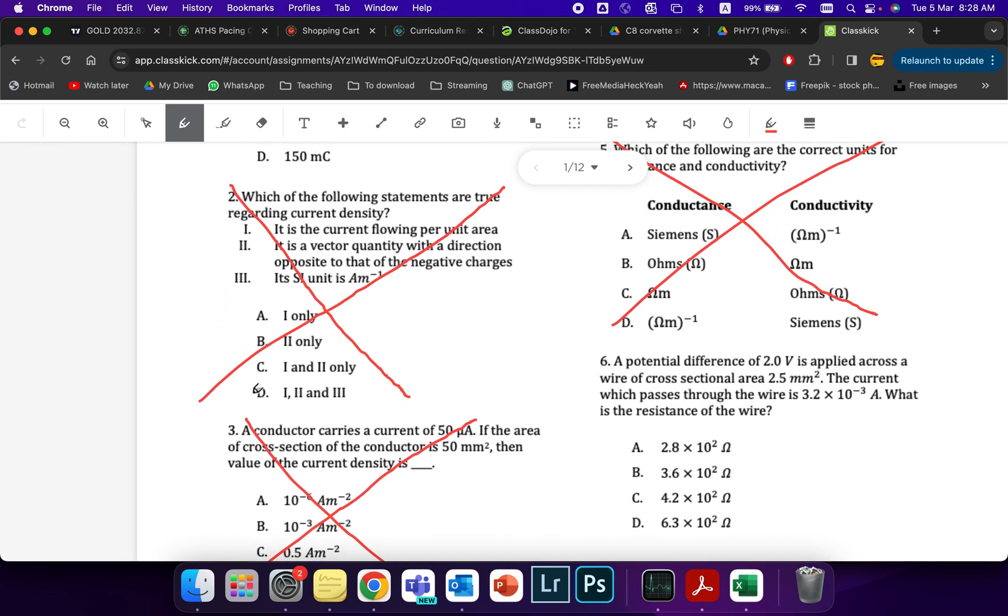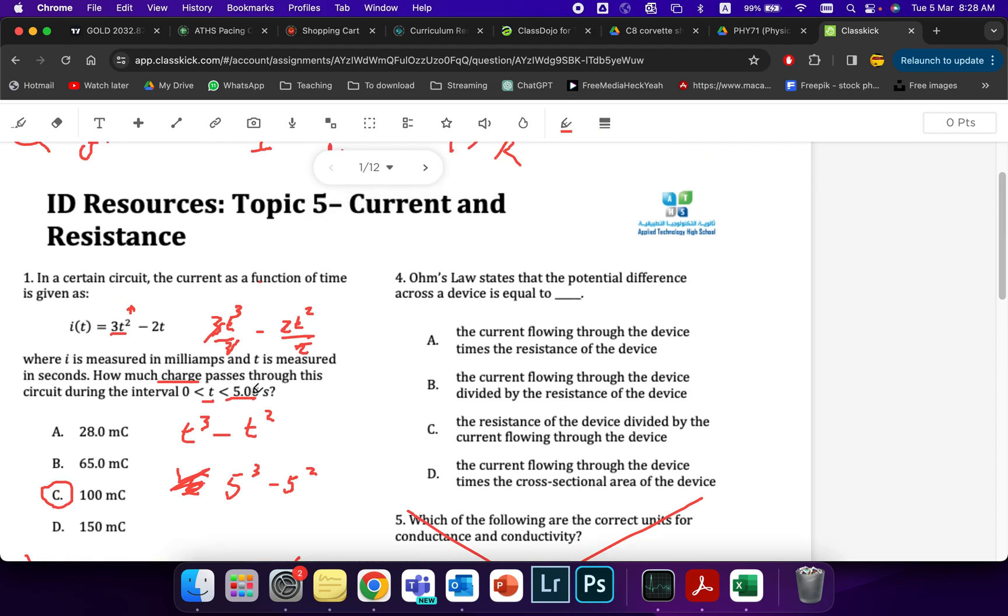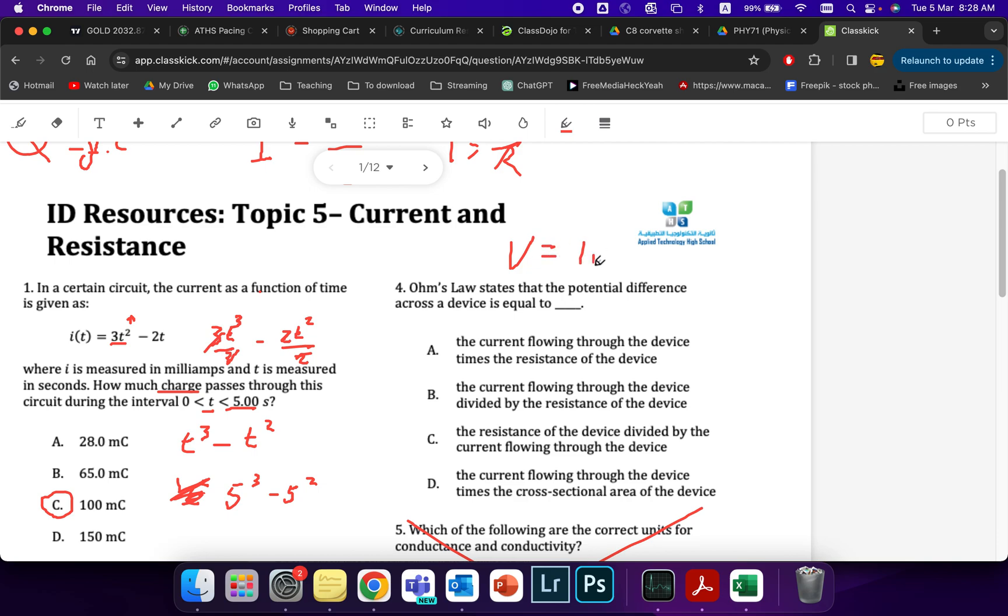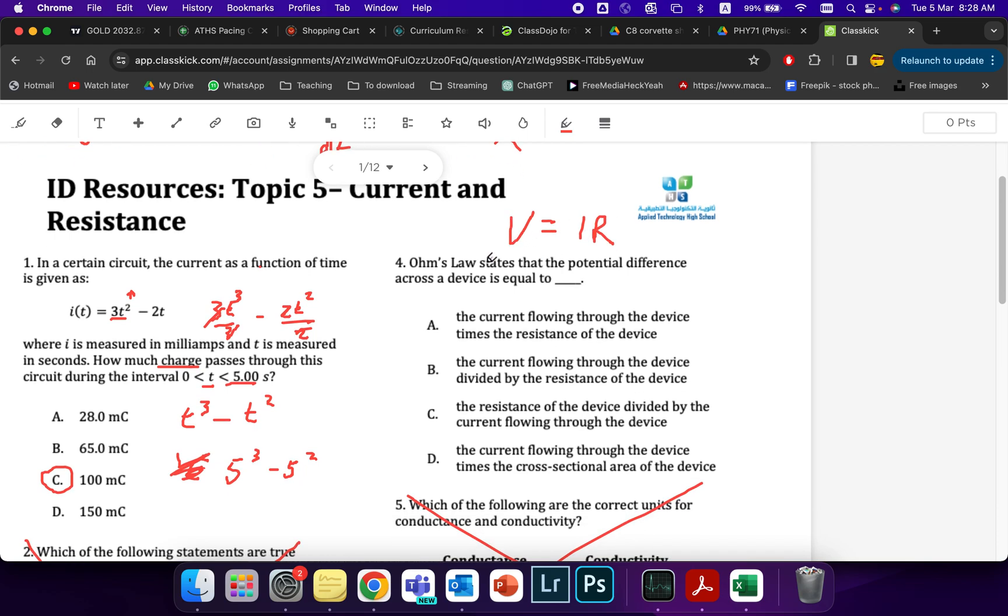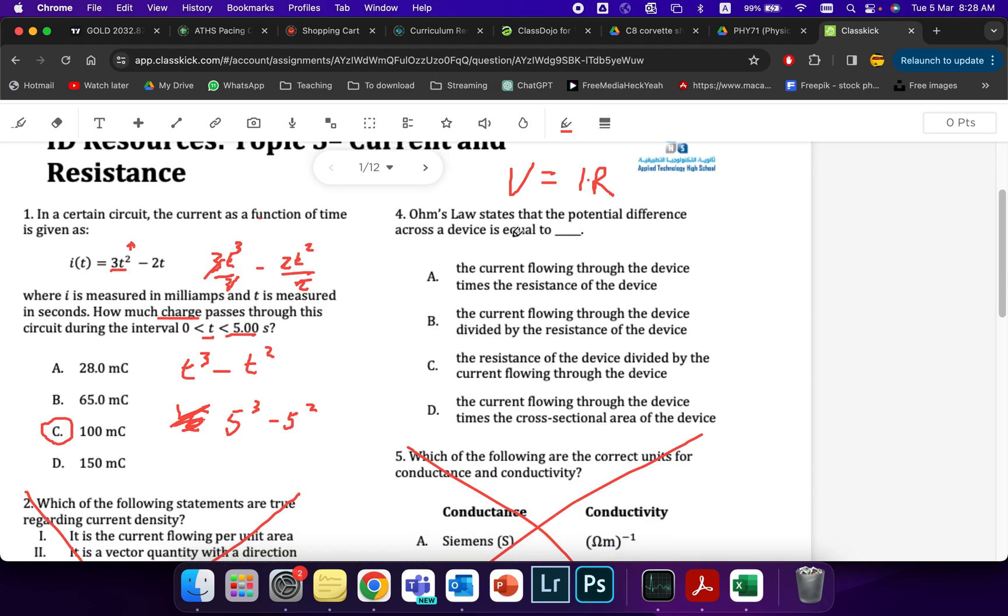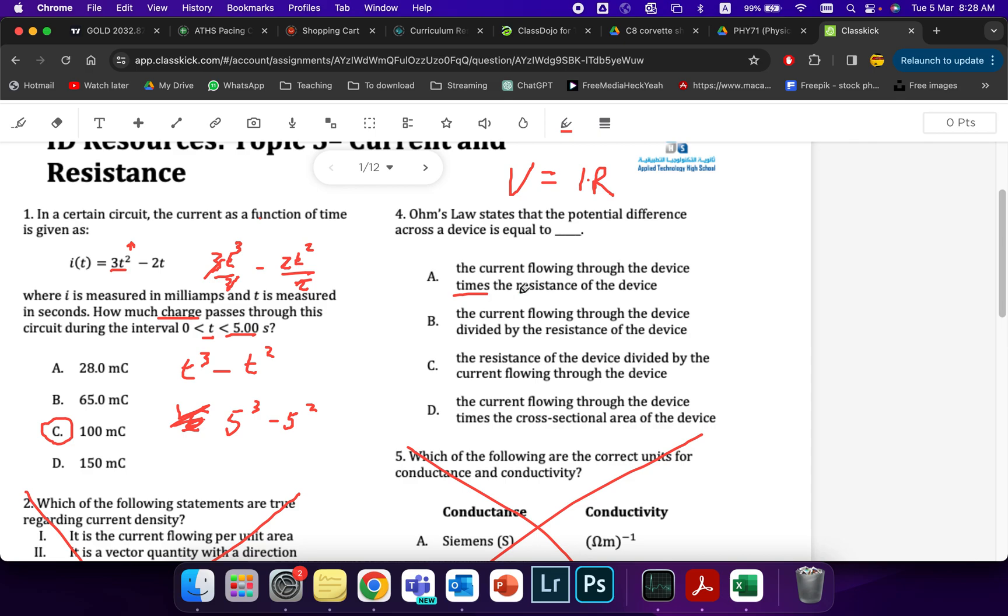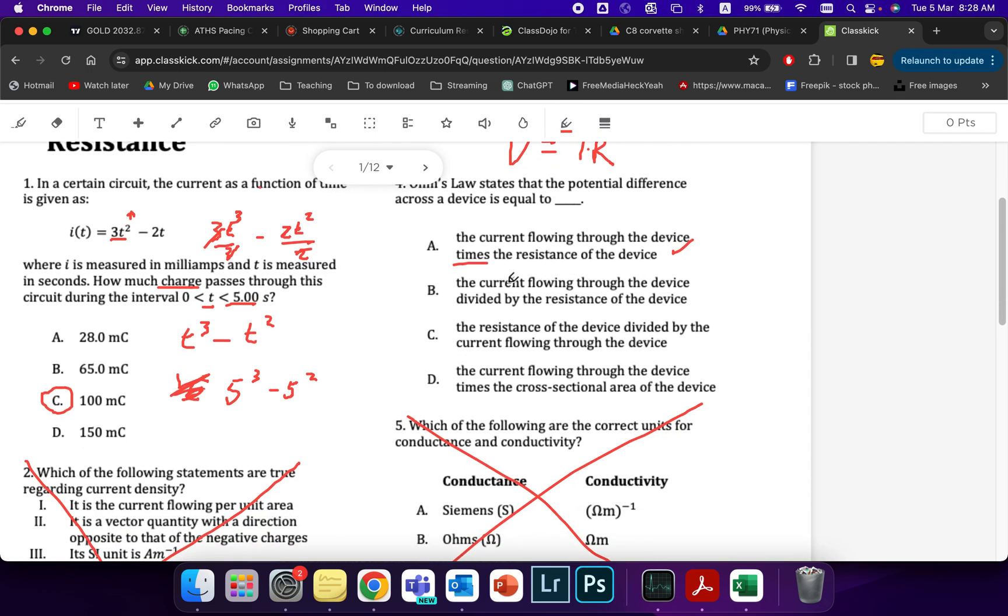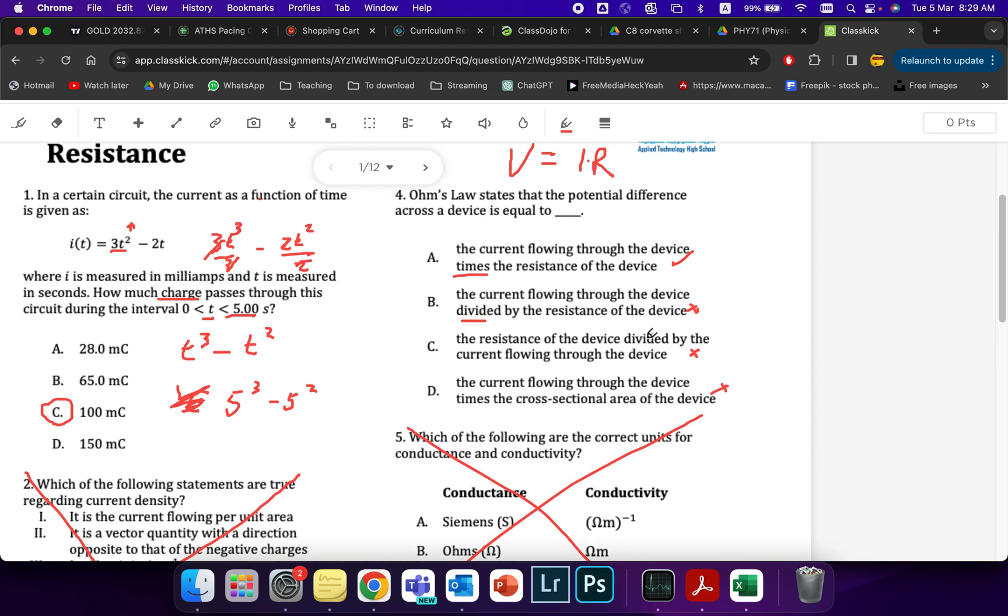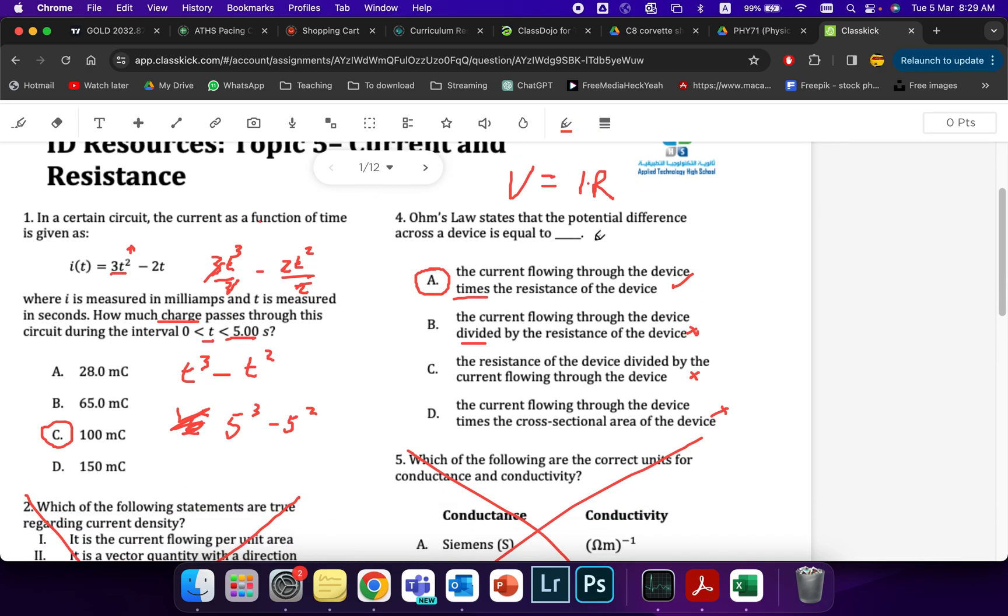So for example, in this one, this will now become 3T cubed over 3 minus 2T squared over 2. The 3s will cancel, and the 2s will cancel. That just simply leaves me with T to the power of 3 minus T to the power of 2. All I do now is I substitute the value in. It's between 0 and 5, so I'm going to put the 5 in here. 5 cubed minus 5 squared. Checking your answer in your calculator, you'll get about 100. So your answer will be C in this case.